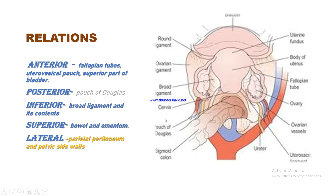Relationships of the ovary: anteriorly — fallopian tubes, uterovesical pouch, and superior part of the bladder; posteriorly — pouch of Douglas; inferiorly — broad ligament and its contents; superiorly — bowel and omentum; laterally — parietal peritoneum and pelvic side walls. These viscera and organs can be seen in the accompanying picture.